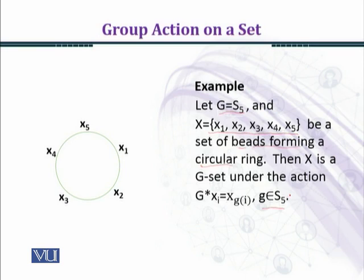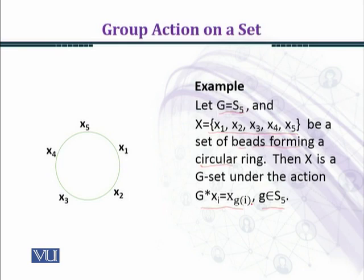جیسا کہ آپ نے permutation کے اندر دیکھا تھا — جب permutation act کرتی ہیں تو images آ جاتی ہیں۔ یہاں پانچ letters ہیں x1, x2, x3, x4, x5 اور اگر identity permutation ہے تو x1 goes to x1, x2 goes to x2, and so on۔ اسی طرح باقی permutations بھی بنا سکتے ہیں اور symbolically g★xi = x_{g(i)} سے represent کر سکتے ہیں۔